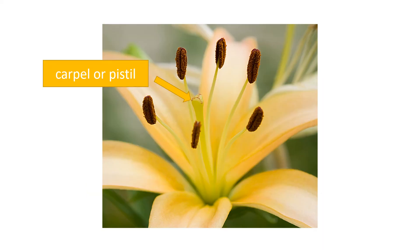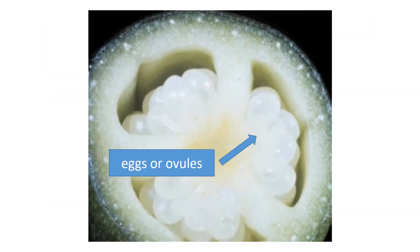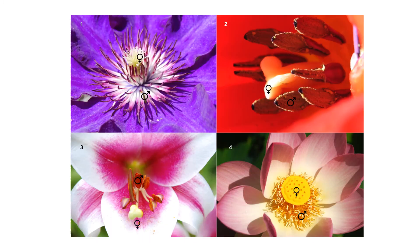The female part of the flower is called the carpel or pistil, and that consists of the stigma which collects the pollen, and the style which carries the pollen to the ovary. This is where the eggs or ovules are produced. So every flower contains both male and female parts which are needed to reproduce and create more beautiful flowers.